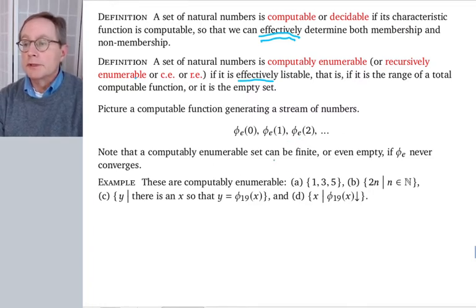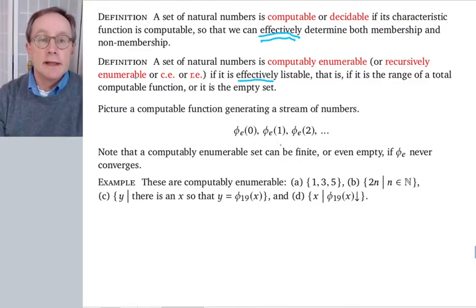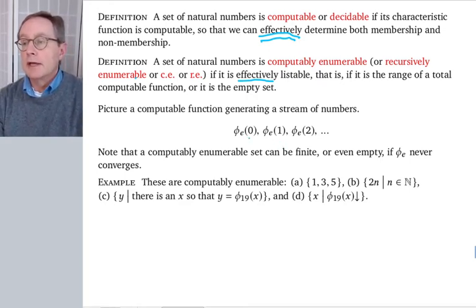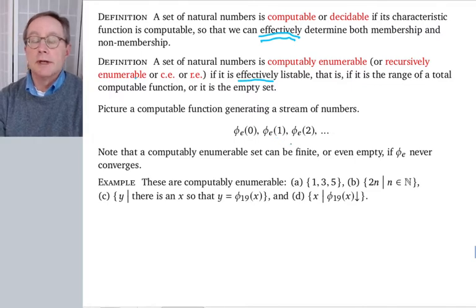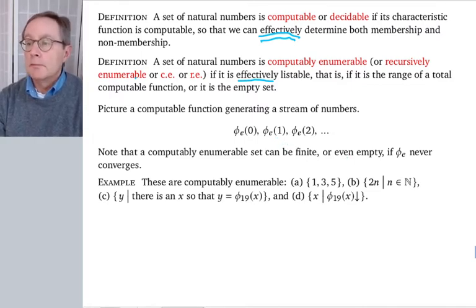So, a computably enumerable set can be finite, that's fine. You could find that when you ran program E, it only ever output a 3, and then never anything again, or it just kept outputting a 3 over and over again. Maybe phi E0 is 3, and phi E1 is 3. Or, it could be empty, maybe phi E is such that it never halts, no matter what the input is, so you never get any output. Or, it can be that phi E outputs infinitely many elements, that can happen too, as is the case with K, with the halting problem set.